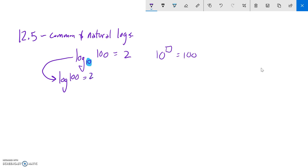So I could evaluate things like log of 1/1000. If it's not written there, it's a base 10. So that would be negative 3.